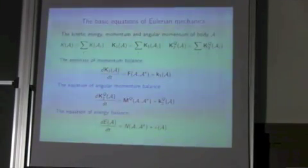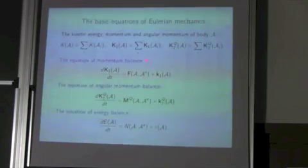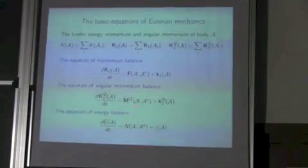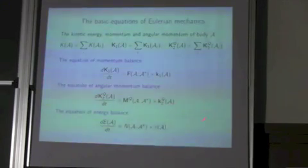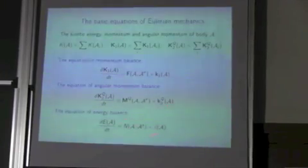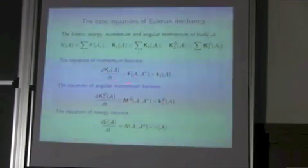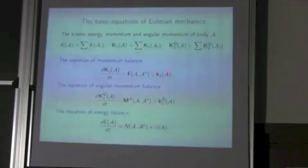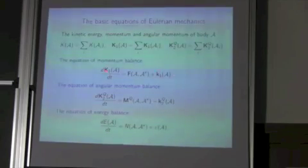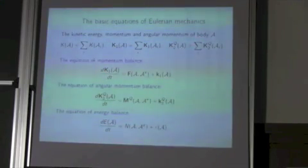The basic laws of Euler mechanics are represented here. These are the equation of momentum balance, the equation of angular momentum balance, and the equation of energy balance. Here we have external forces, external moments, and terms which characterize the supply of momentum and angular momentum into the system. These equations are formulated for an arbitrary body.